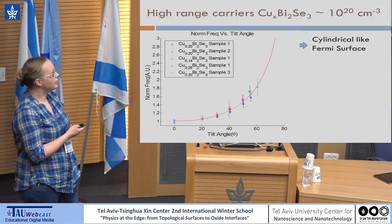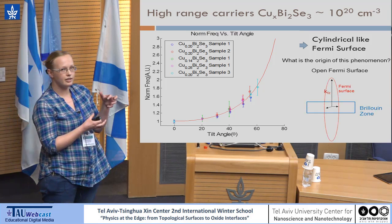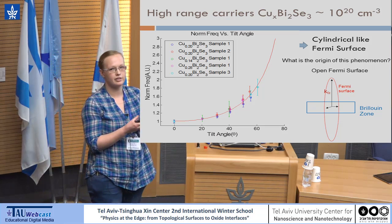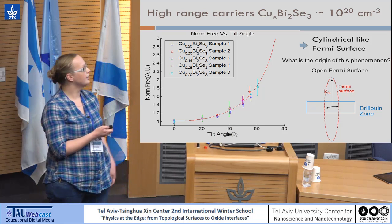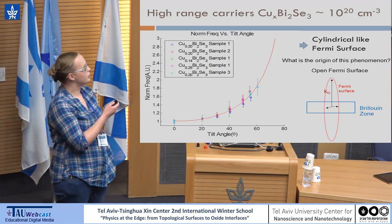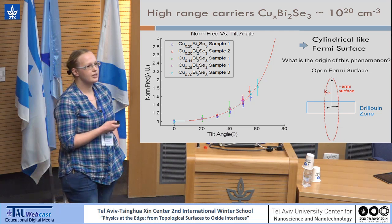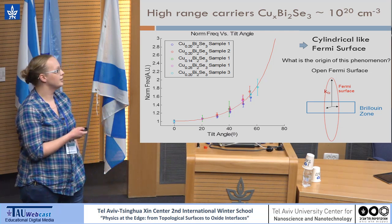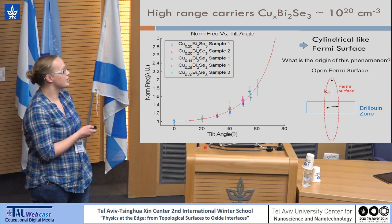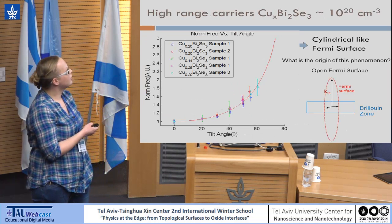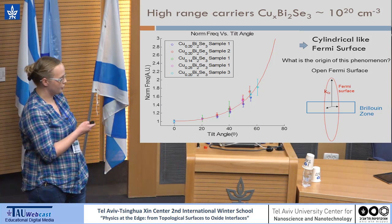What this means is that at lower carrier density the Fermi surface is closed; as you increase the carrier density it becomes more elongated; and at the carrier density at which the material is superconducting — the highest carrier density — the Fermi surface becomes so elongated that it is no longer entirely contained within the Brillouin zone and is open. The frequency does not follow a perfect one-over-cosine-theta dependence of a perfect cylinder.